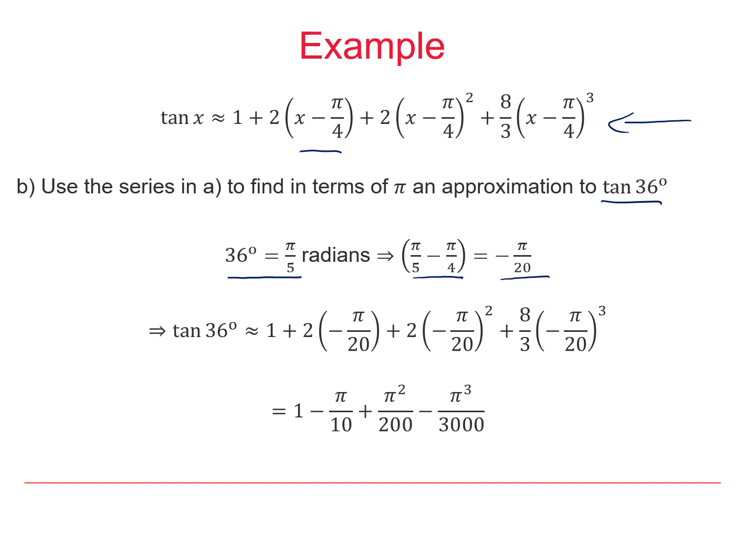Then we can substitute that value straight into each of the brackets in our series expansion. And then you just end up multiplying those out. And that gives the approximate value for tan 36 degrees equal to 1 minus π over 10 plus π squared over 200 minus π cubed over 3000.